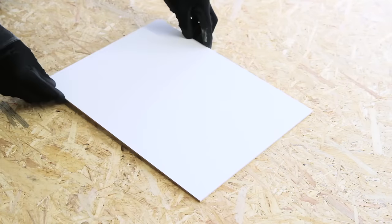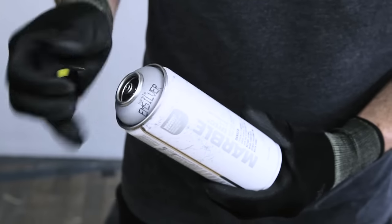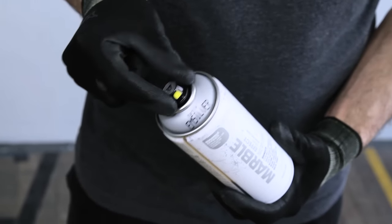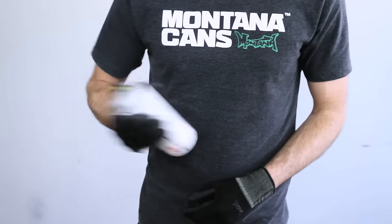Surfaces should be clean and dry. Remove the safety ring by removing the nozzle and turning the can upside down, allowing the ring to fall out. Shake can well for 2-3 minutes.